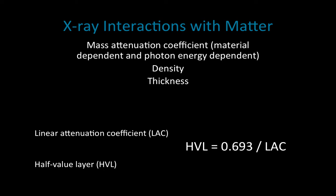That's why our lead aprons used in interventional radiology are relatively thin. If you wanted to achieve the same amount of shielding with a different material, the thickness required would be too much and we wouldn't be able to achieve that. The linear attenuation coefficient relates to the half value layer in that sense, but the LAC is a little more complicated to calculate, so the half value layer comes in handy for a lot of calculations.